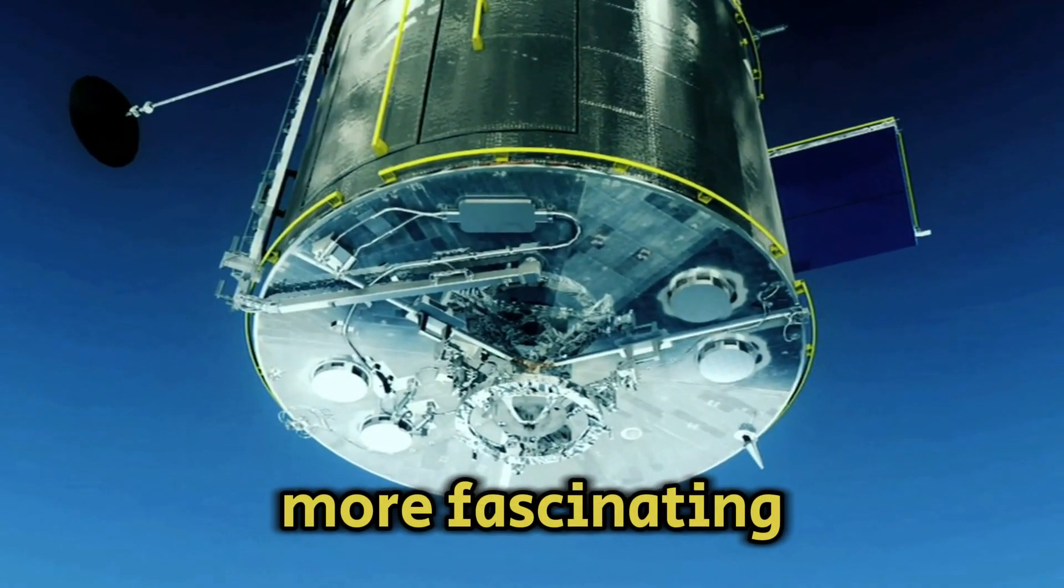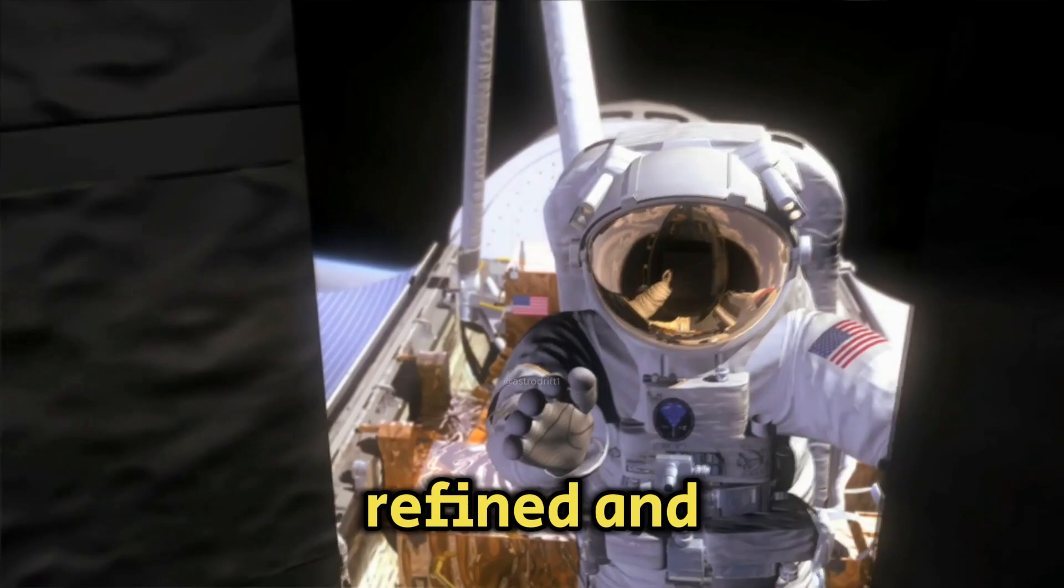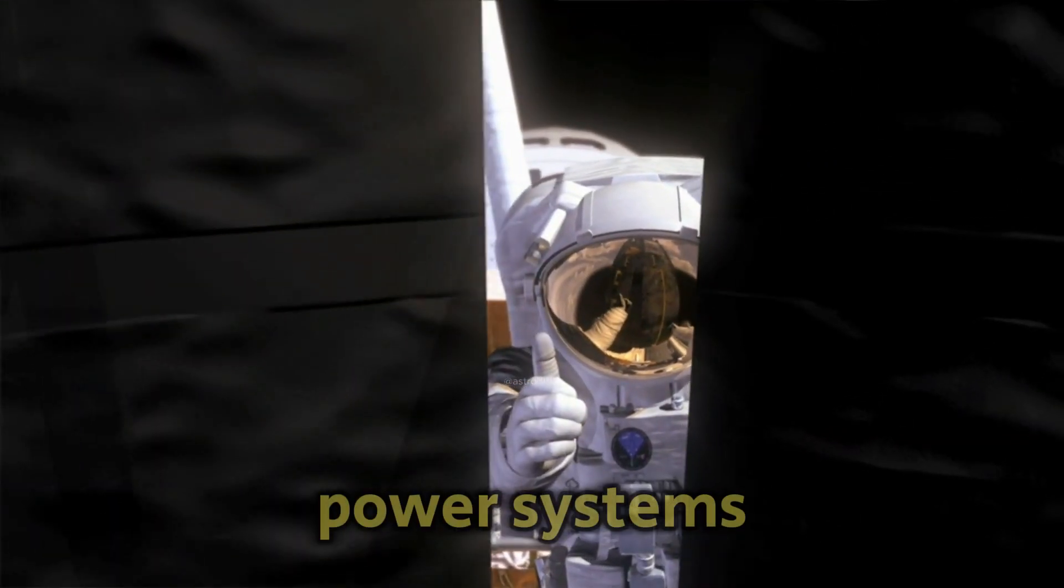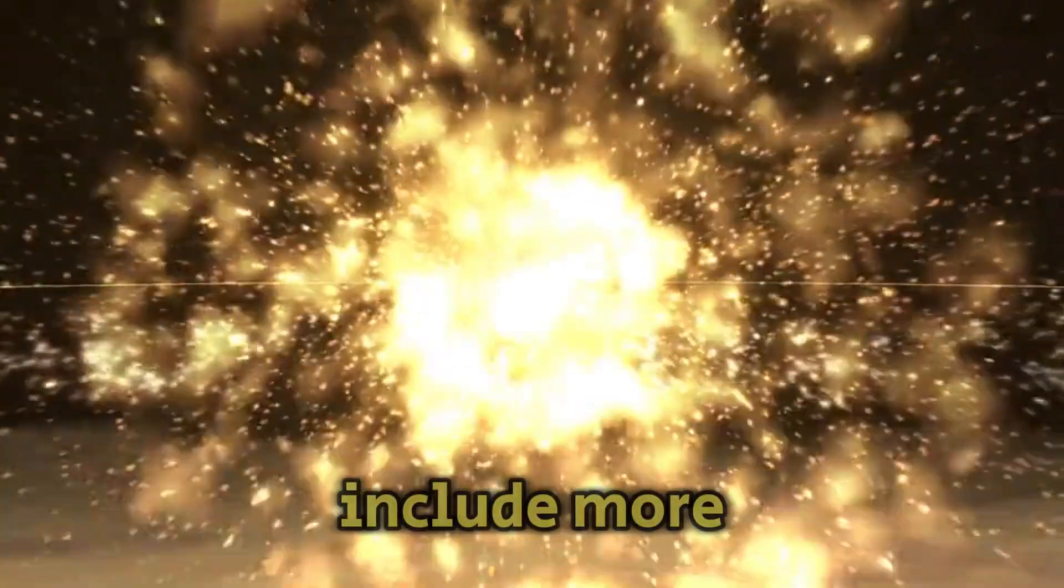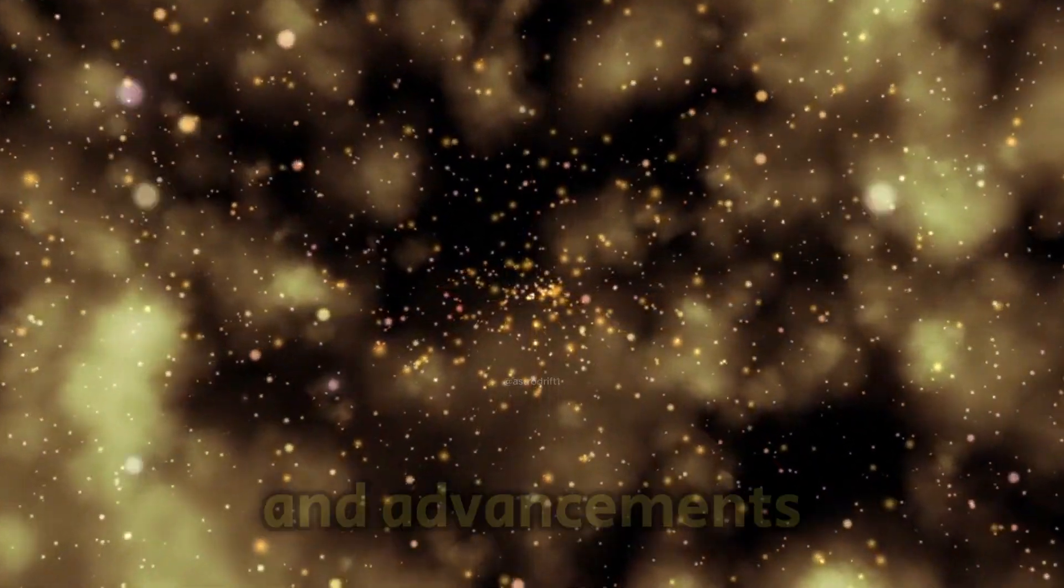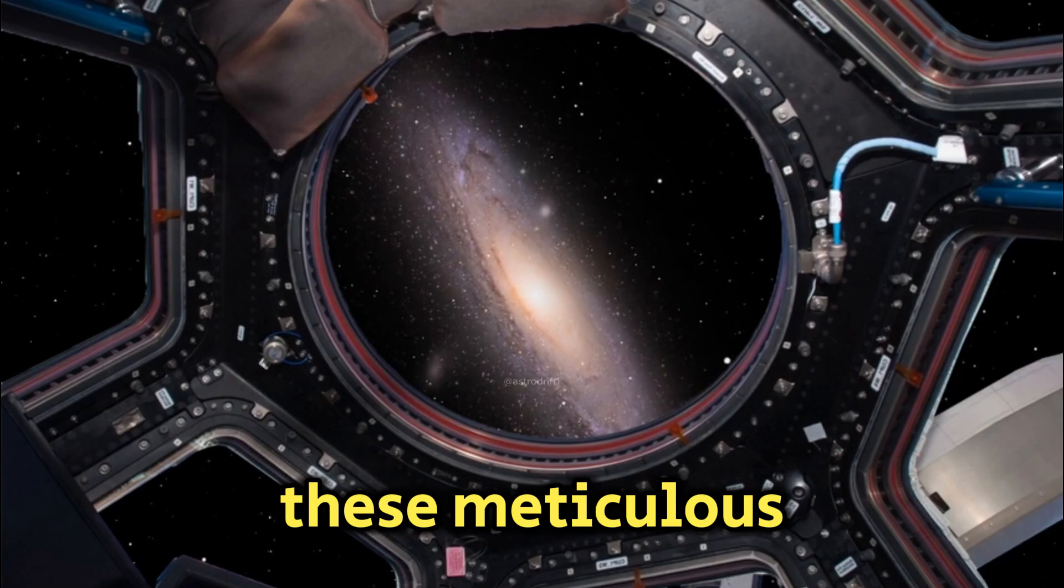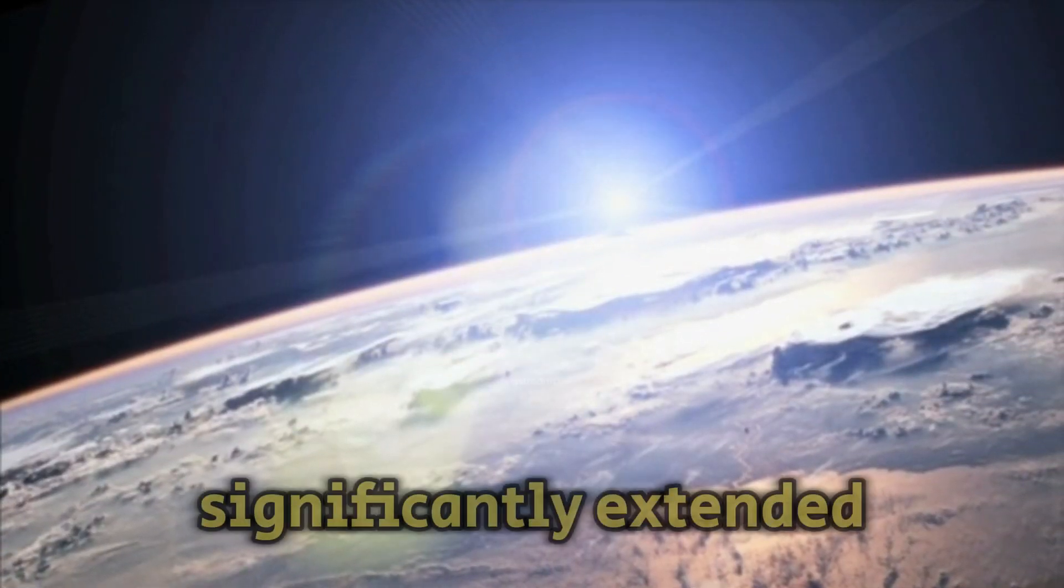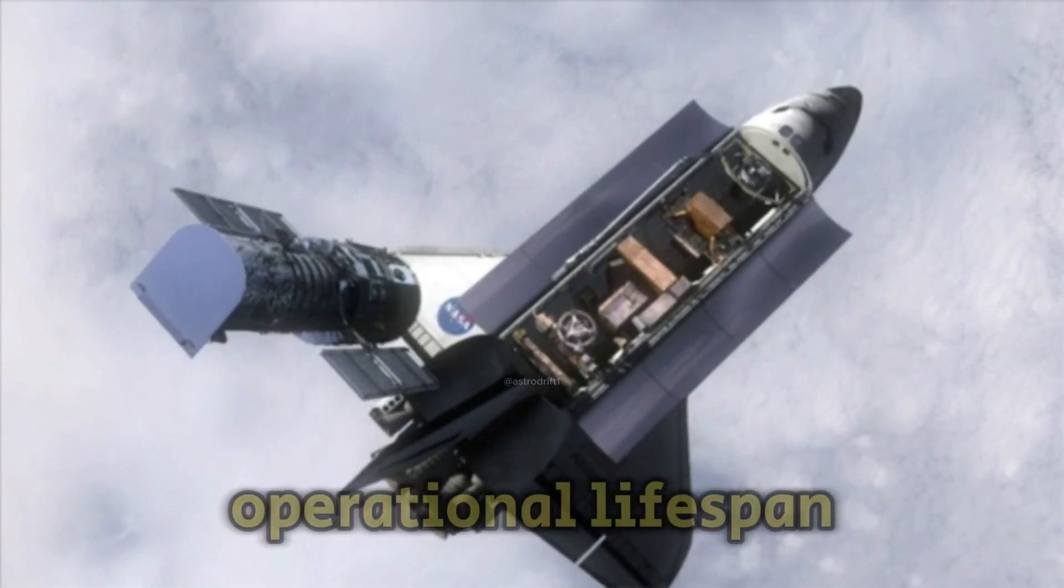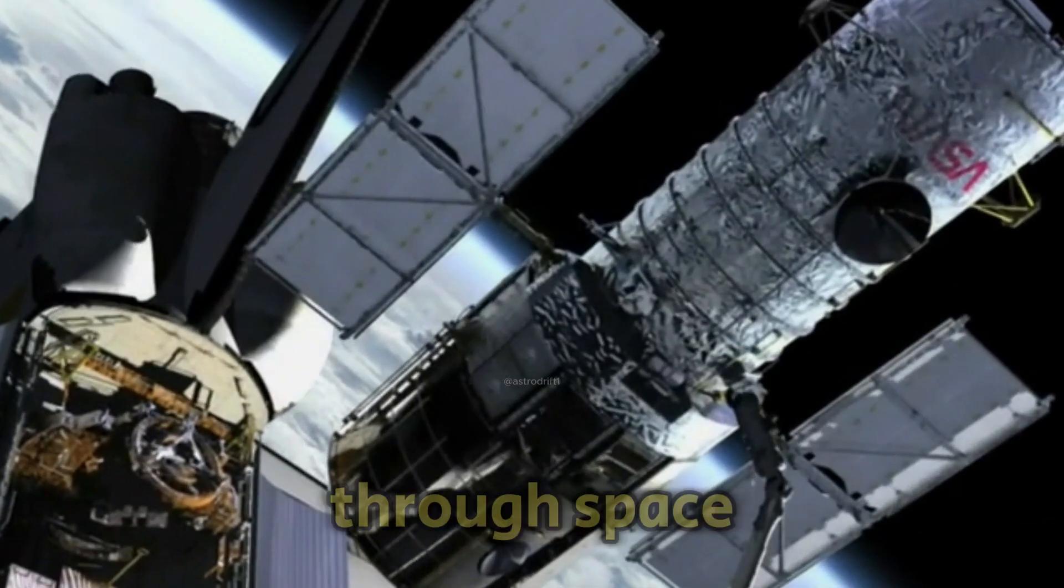What makes this even more fascinating is the ongoing advancements in power management technology that have refined and optimized the Voyager probe's power systems. These improvements include more efficient power distribution, enhanced battery charging methods, and advancements in power regulation and control. Thanks to these meticulous strategies, engineers have significantly extended Voyager 1's operational lifespan, allowing it to continue its remarkable scientific journey through space.